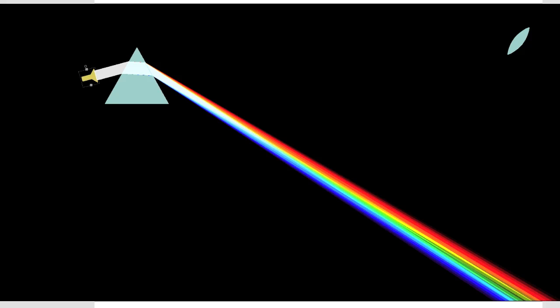And the reason this works is that when white light goes through a prism, all the colors bend by slightly different amounts and that makes a beautiful rainbow arrangement of colors, or otherwise known as the spectrum.